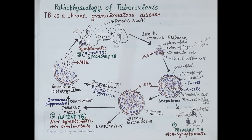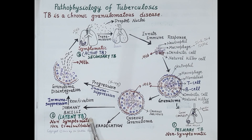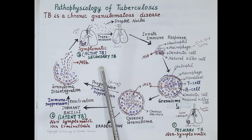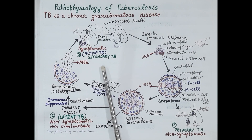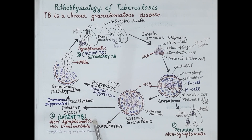Primary TB occurs when a person is infected for the first time with Mycobacterium tuberculosis — a granuloma is formed but the person does not show symptoms and the disease cannot be transmitted because the bacilli are confined to the granuloma. Latent TB occurs when the bacilli become dormant and cannot multiply, so neither symptoms are produced nor is the disease transmitted. Active TB occurs when, due to immunosuppression, dormant bacilli reactivate, start multiplying, the granuloma gets ruptured, and the infection spreads throughout the lungs — it is also known as secondary TB and is both symptomatic and transmittable.